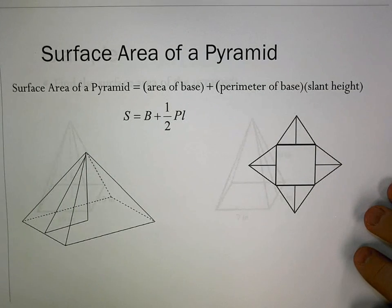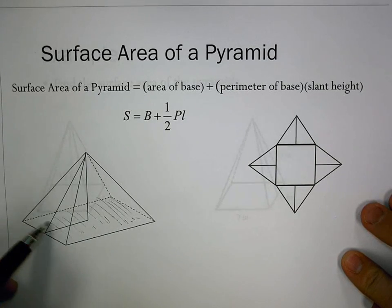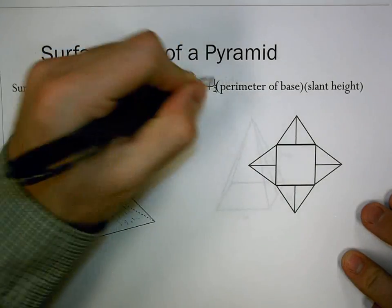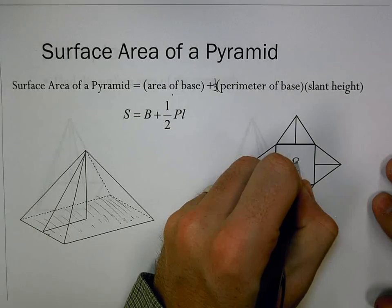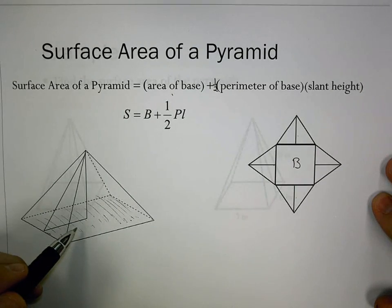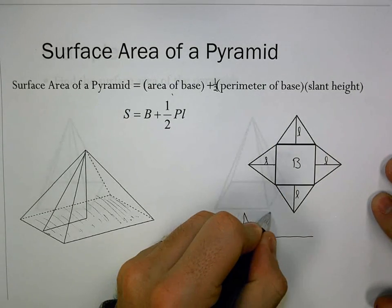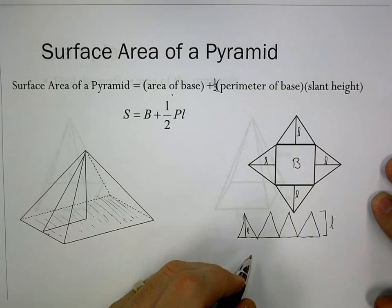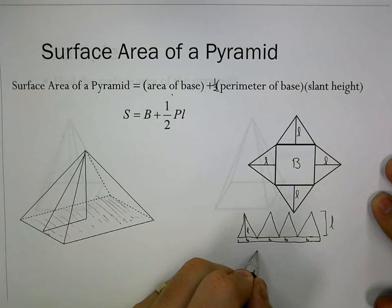The surface area formula for a pyramid is different from a prism. A pyramid has only one base, so we need the area of the base. The other part involves finding one half the perimeter of the base times the slant height. If we draw all four triangles of the pyramid flat in a row, their combined base value is the perimeter of the base.